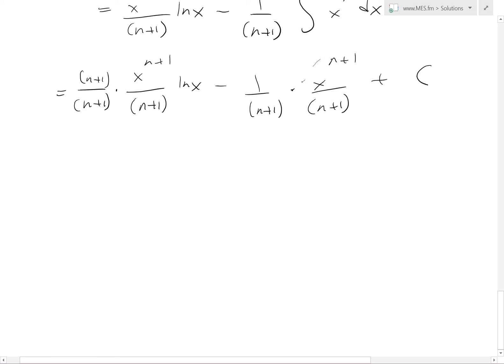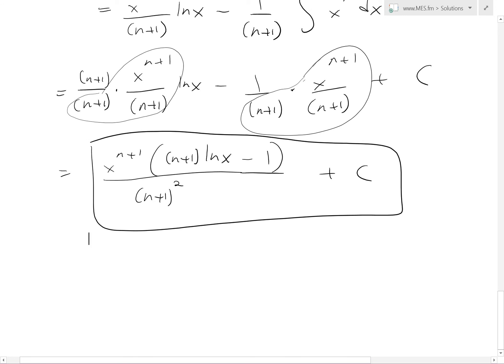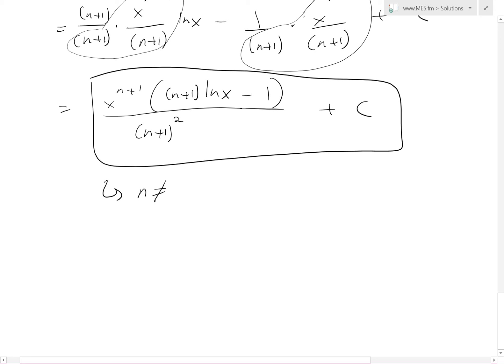So what we get is x^(n+1) over n plus 1 squared. Now we have this ln x, actually this part is still in there. That x to the n plus 1, ln x, and then minus 1. And then plus c. So there is our exact answer that we proved, and once again, n is not equal to negative 1, because you have the undefined, or it goes to infinity, 1 divided by 0.